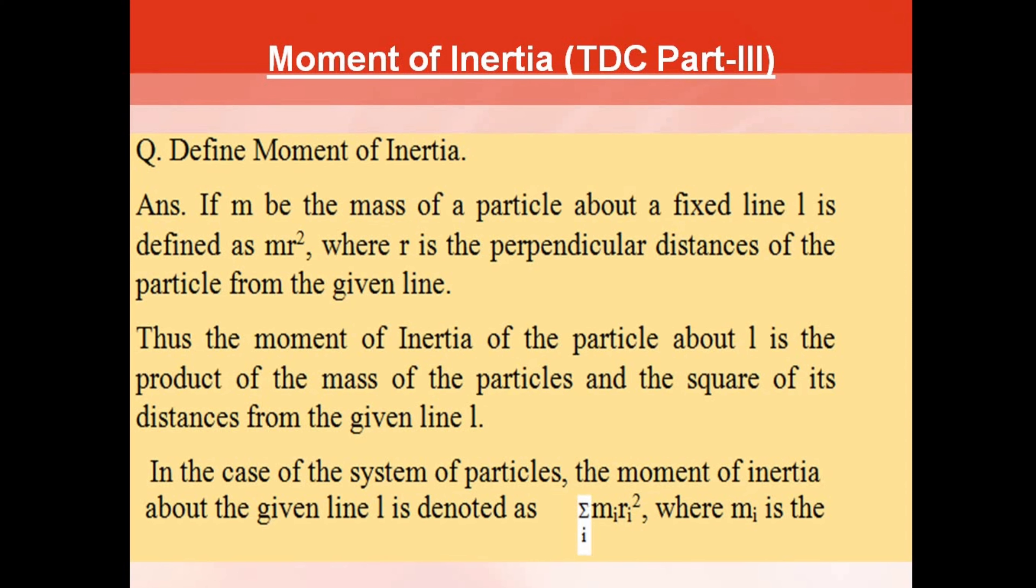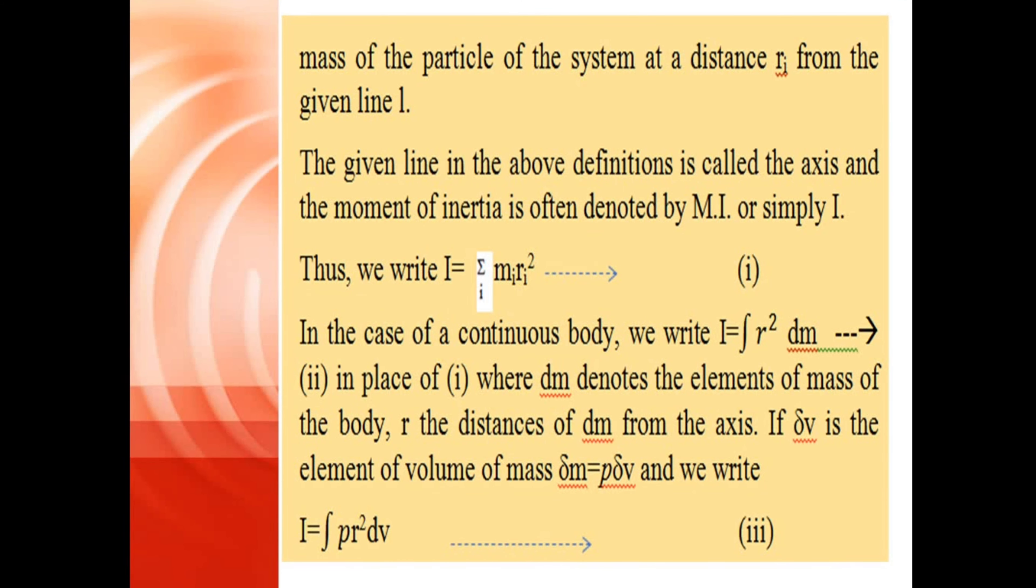In the case of a system of particles, the moment of inertia about the given line l is denoted as Σmᵢrᵢ², where mᵢ is the mass of a particle of the system at a distance rᵢ from the given line l.